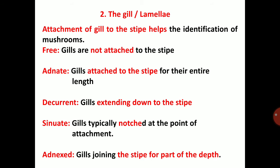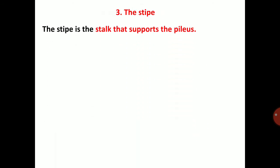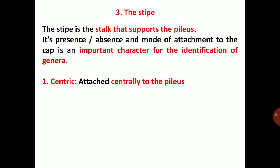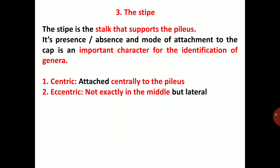The stipe is the stock that supports the pileus. Its presence or absence and mode of attachment to the cap is an important character for identification of genera. The stipe may be centrically attached, eccentric, or lateral. In some cases the stipe is lacking.